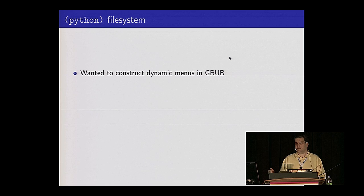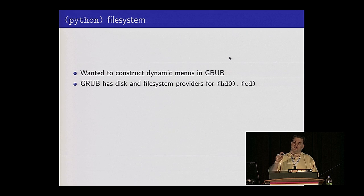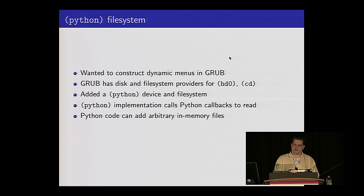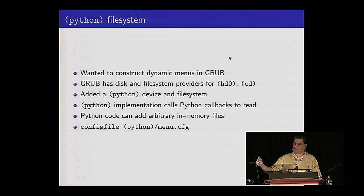Apart from that, we also wanted dynamic menus in Grub. Grub has a lovely menuing system — choose do you want to boot Linux, Windows, or some other version. We wanted that menu to do things like select test suites, run all tests, do exploratory activities, or pull up a prompt. Grub already has disk and file system providers for things like your hard disk, CD-ROM, floppy drive, so we added one for Python. There is a 'grub:(python)' device that when you call it will go read the file you specified by handing it to Python to evaluate and feeding the data back into Grub. You can add any in-memory file you want — it's a lot like FUSE. And then you just run a Grub command: my config file is in the Python filesystem, menu.cfg.